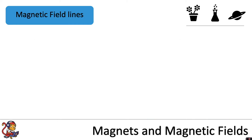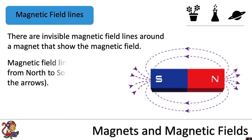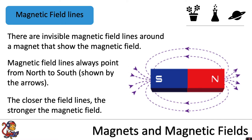There are invisible magnetic field lines around a magnet that show the magnetic field. Magnetic field lines always point from north to south, shown by arrows. The closer the field lines, the stronger the magnetic field — you can see at the poles the field lines are very close together, so there's a strong magnetic field at the poles.